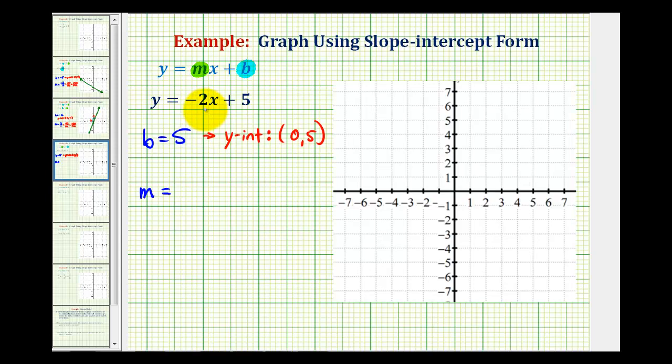And to make use of the slope, it's helpful to have it as a fraction, so we'll write negative 2 as negative 2 over 1, which represents the change in y with respect to the change of x, which can also be expressed as the rise over the run.